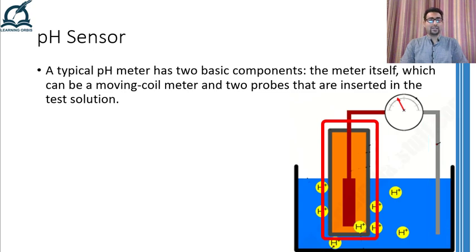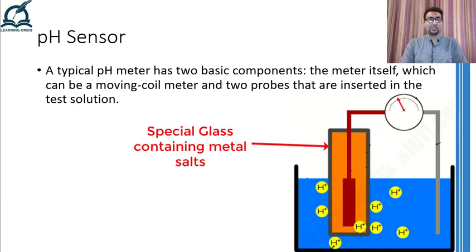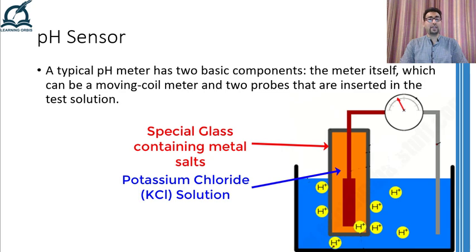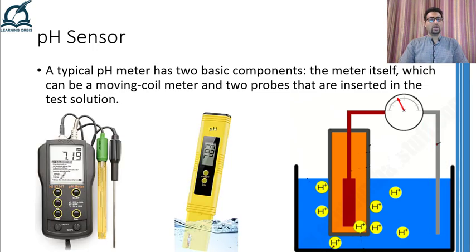One of the two probes is a glass electrode that does the main job. The glass electrode is made of special glass containing metal salts in it. Inside the glass electrode is a potassium chloride solution that has a pH value of 7. Furthermore, a silver-based wire is also present in the tube that is connected to the outside of the tube and then to the meter. The other probe is simply a potassium chloride wire suspended in a potassium chloride solution. The whole device comes in two different forms: in one of them, both probes are separately provided, whereas in the other, a single housing contains both probes.